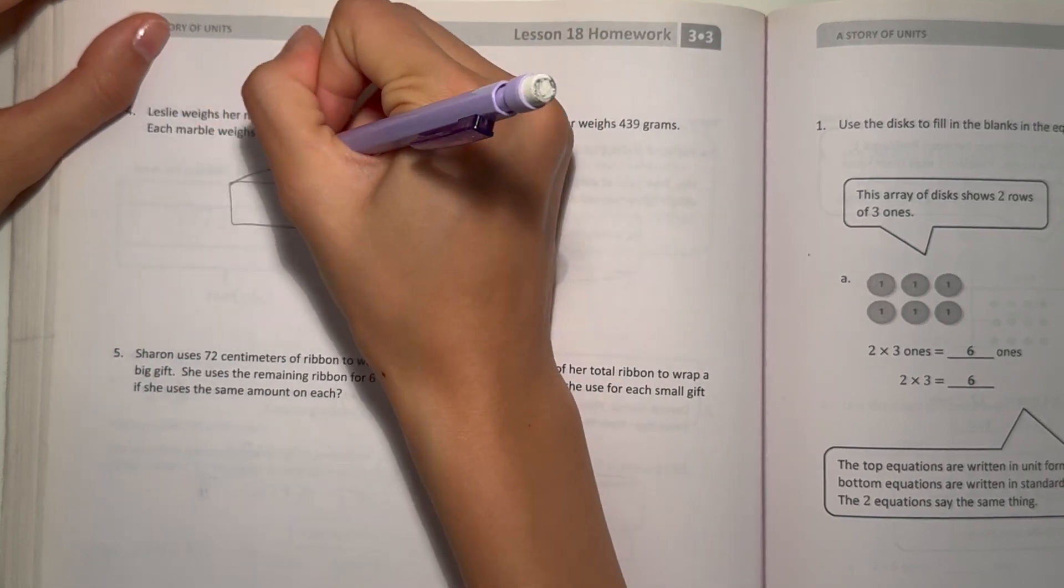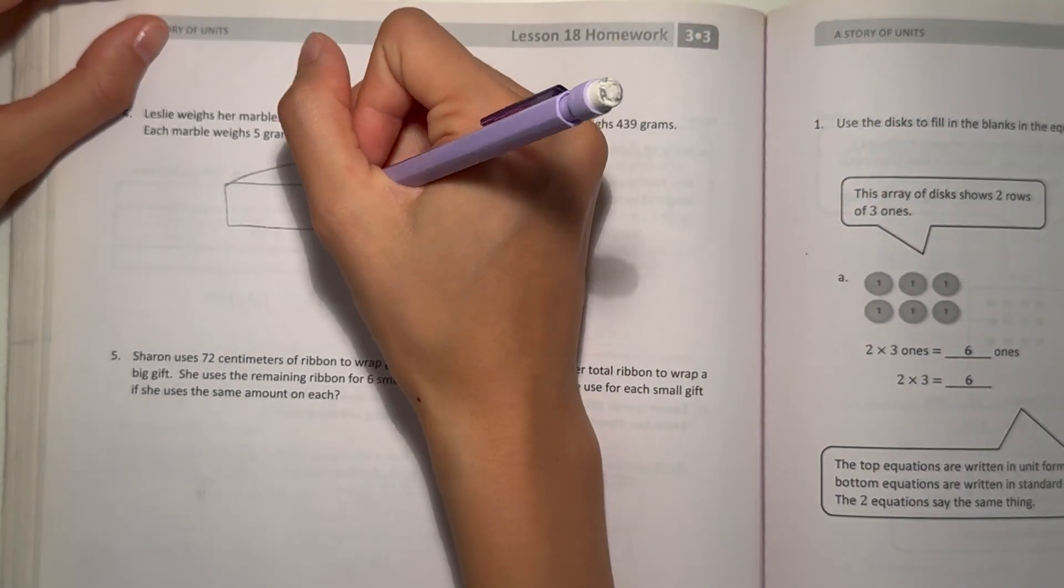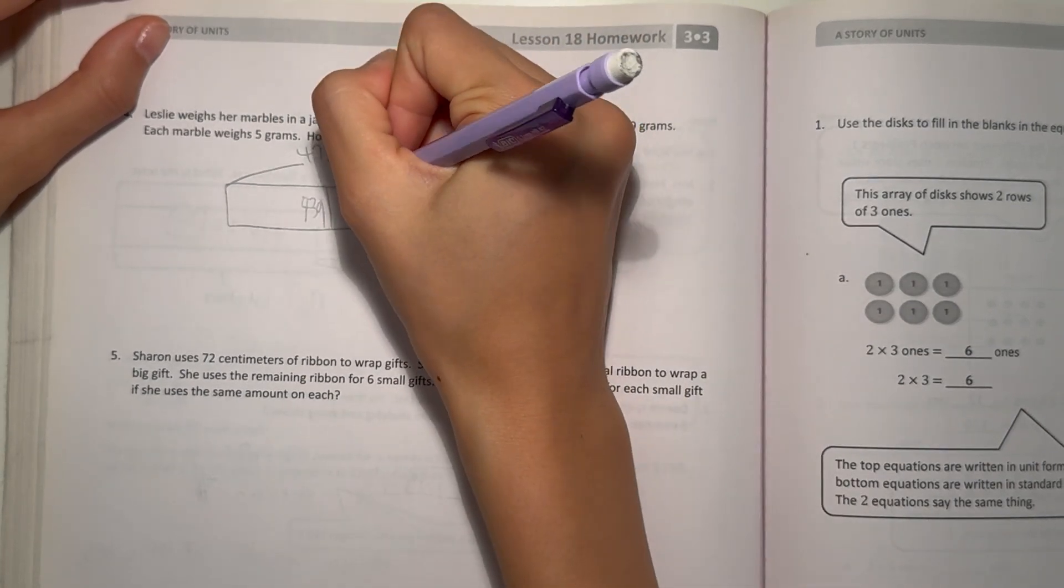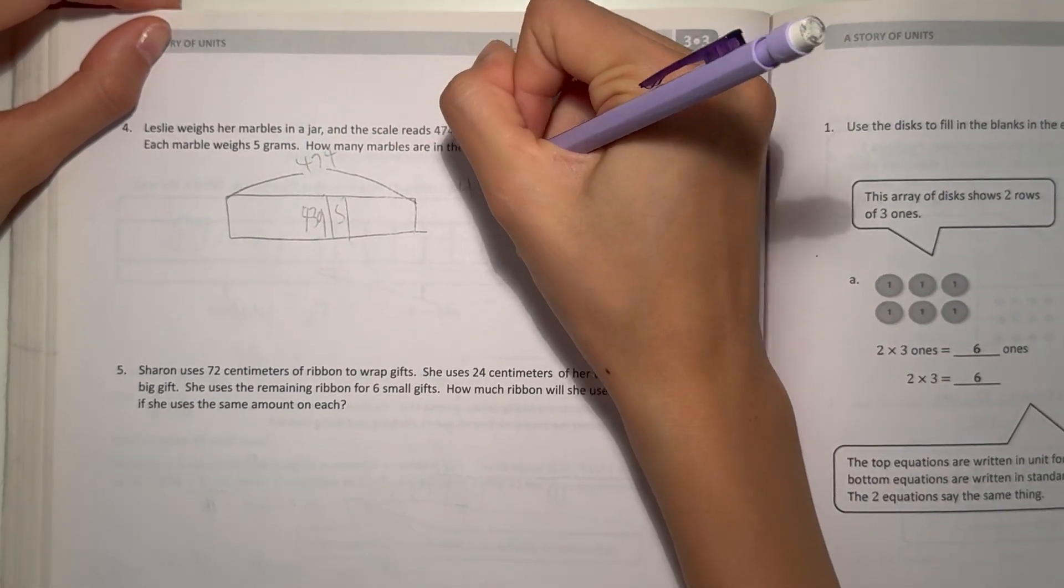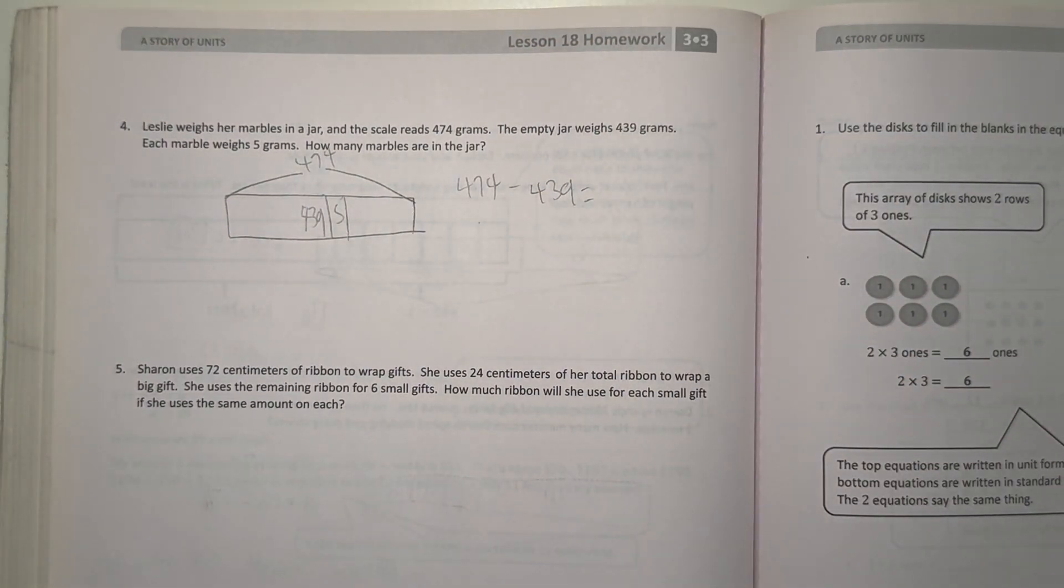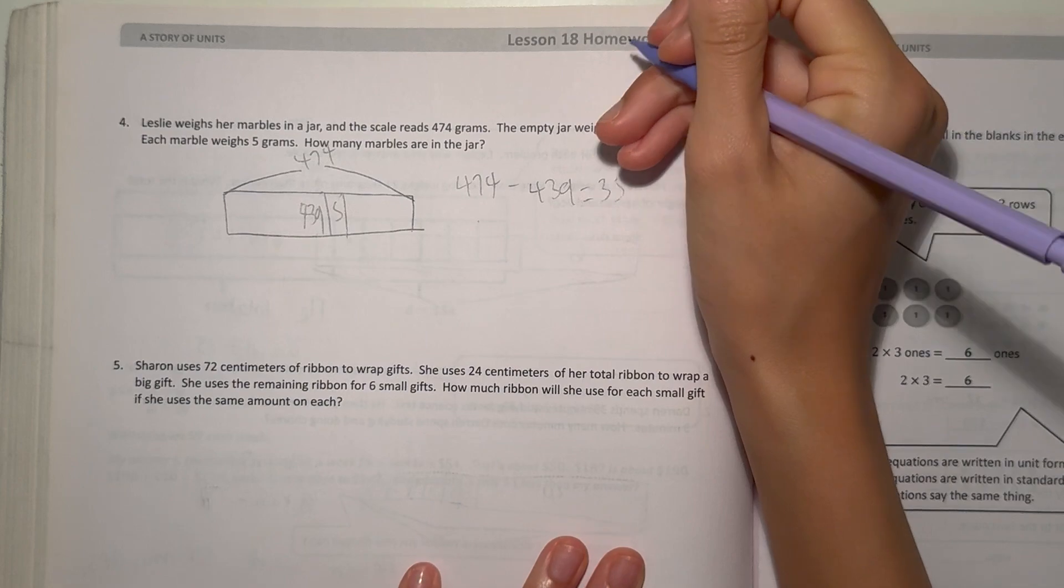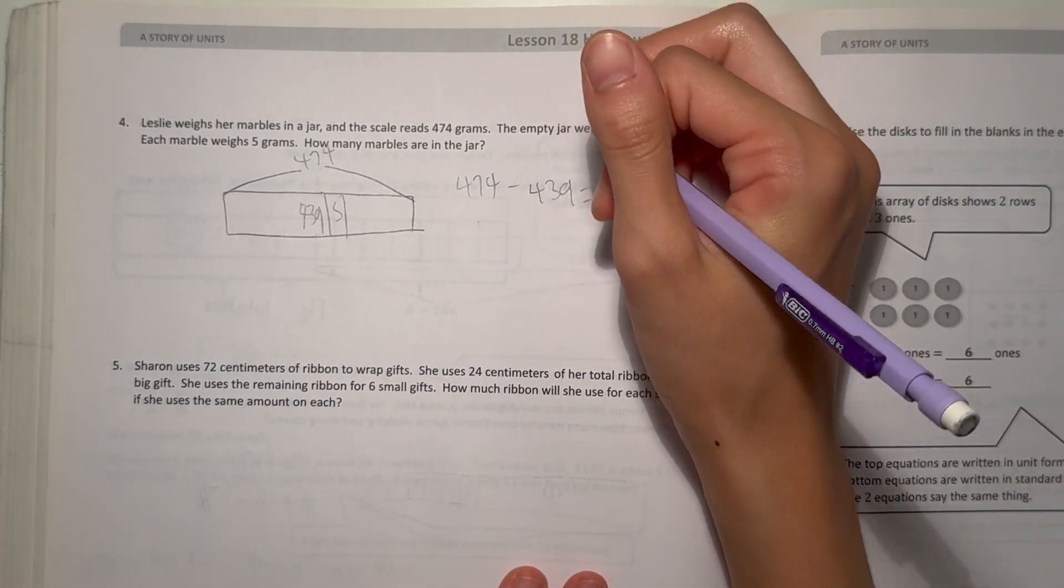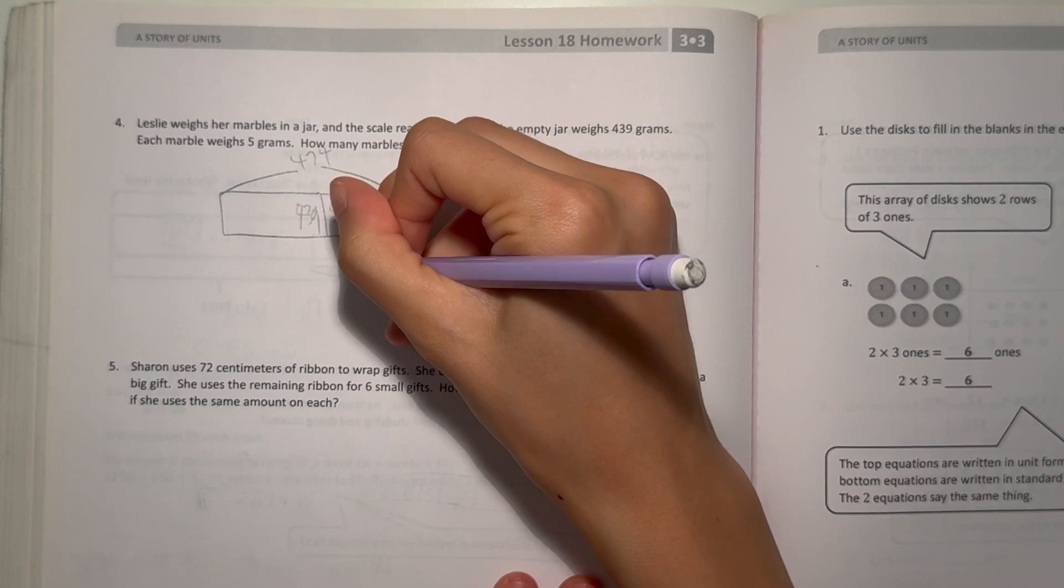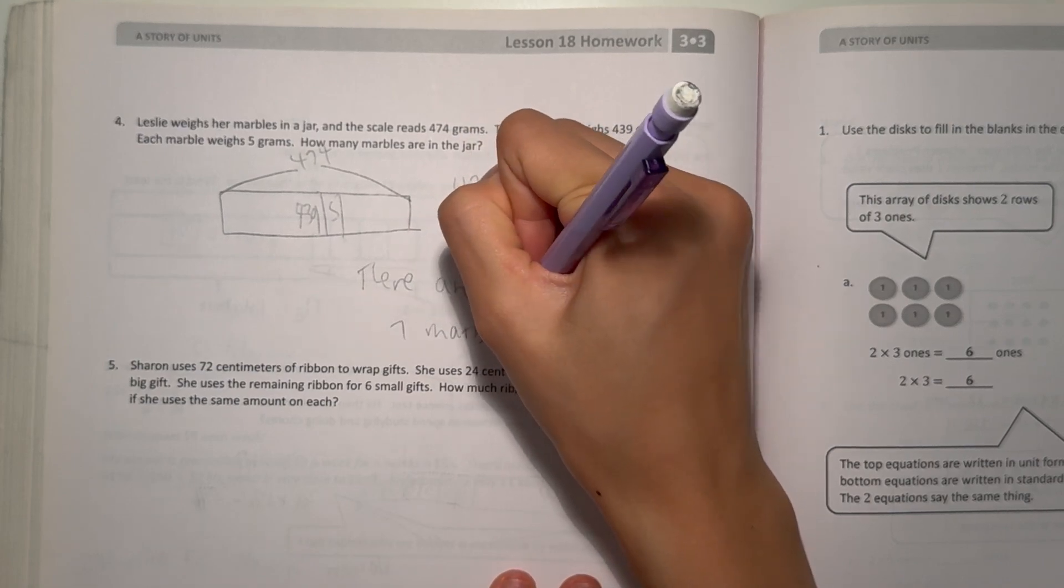Alright. So the total weight is 474. And since the empty jar weighs 439 grams, and each marble is 5 grams, how many marbles are there? Well, 474 minus 439 first. 474 minus 439, that would be 35. Alright, so that means 35, that's how much the marbles weigh all together. 35 divided by 5, because each marble weighs 5, that's 7. Which means there are 7 marbles in the jar.